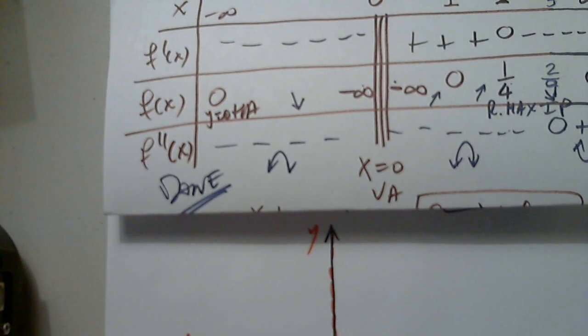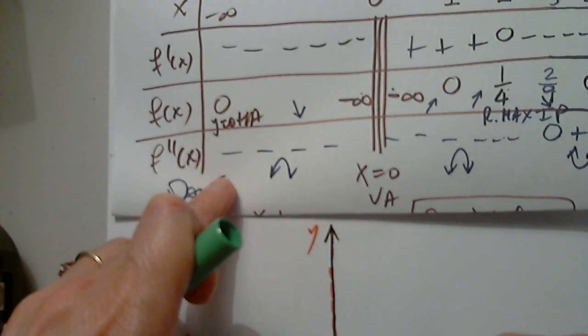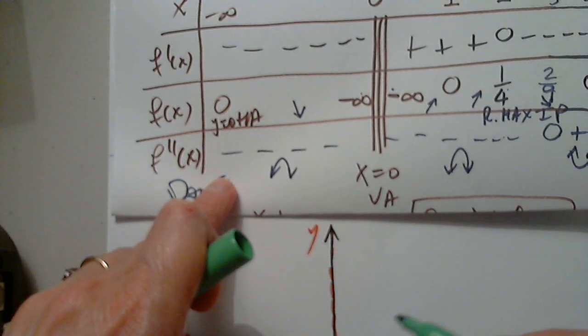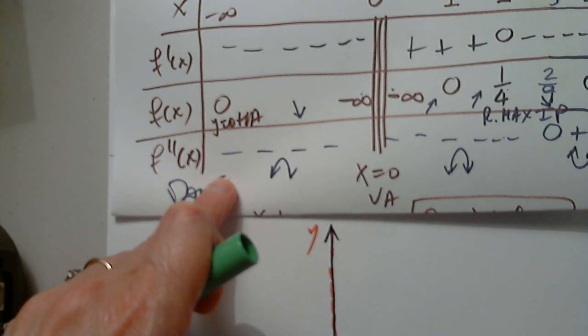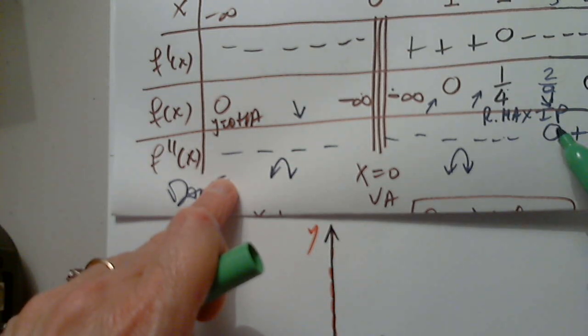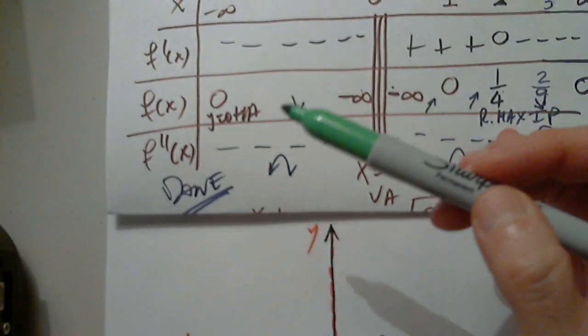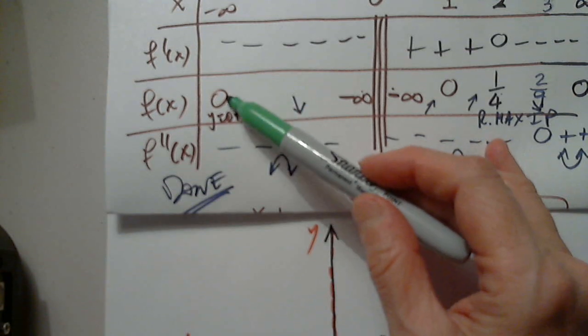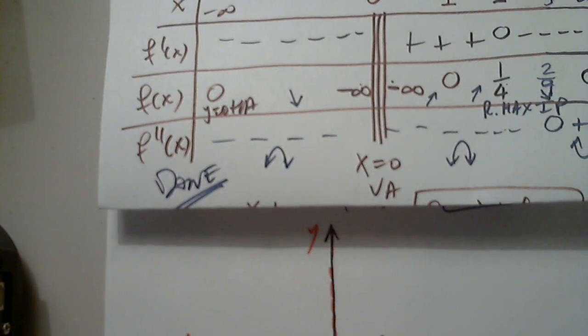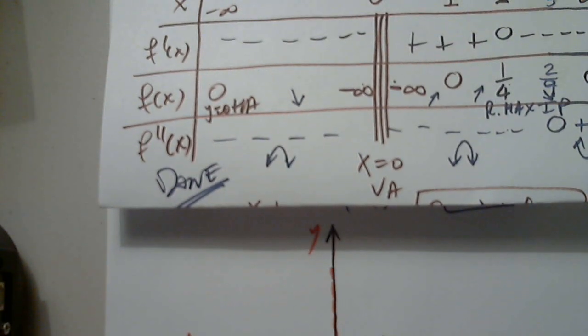Then I will plot the points that I have. I have 1 comma 0. I have 2 comma whatever. And I have 2 over 9. Somewhere here. So 1, 2, and 3. Now, opening down. Decreasing from 0 to negative infinity. It cannot be easier on that side.